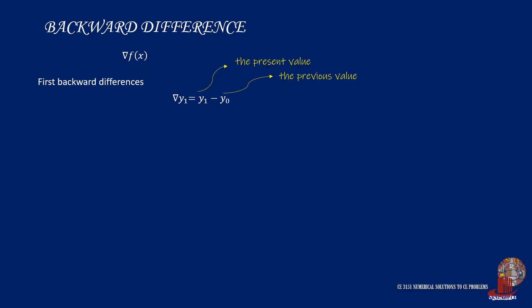So if we attempt to take nebula of Y0, that would be Y0 minus something we don't know. So unlike the previous method, which started with Y0, the backward difference starts with Y1. Nebula Y2 is then Y2 minus Y1, and nebula Y3 is then computed as Y3 less Y2.